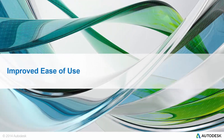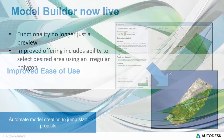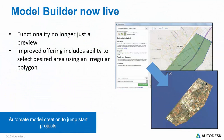The next big area of improvements surrounds usability, of which a number of significant steps forward have been made. First up is the production version of Model Builder. Previously a preview feature, Model Builder will be released as a production version in this launch. Along with many stability improvements, Model Builder now offers the ability to select irregular polygons, allowing you to easily create models for long pipelines, winding roadways, and sprawling cities.